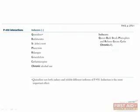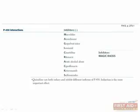P450 inducers can be remembered with the mnemonic 'Queen Barb steals fen-fen and refuses greasy carbs chronically,' standing for quinidine, barbiturates, St. John's wort, phenytoin, rifampin, griseofulvin, carbamazepine, and chronic alcohol use.